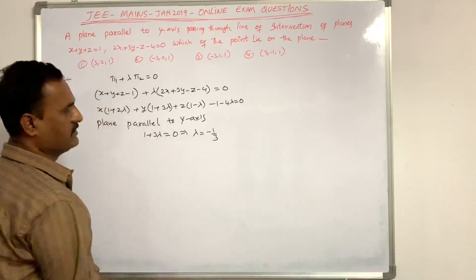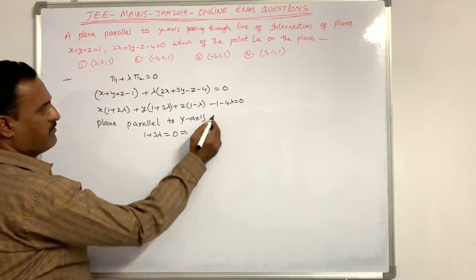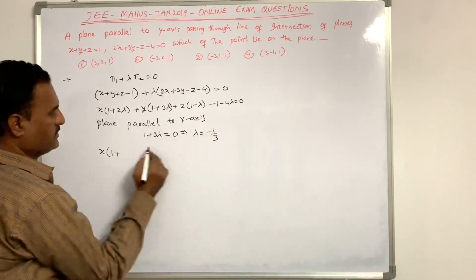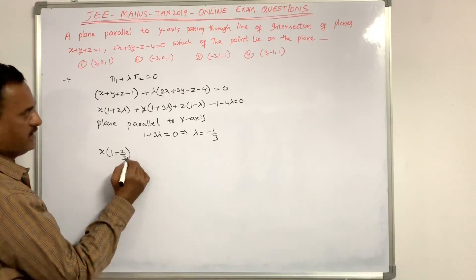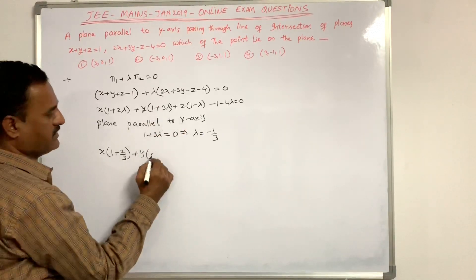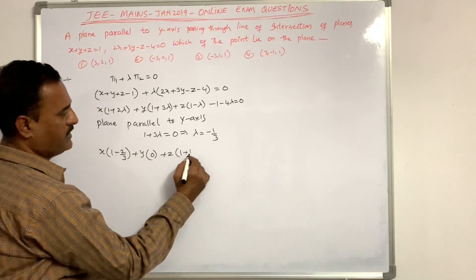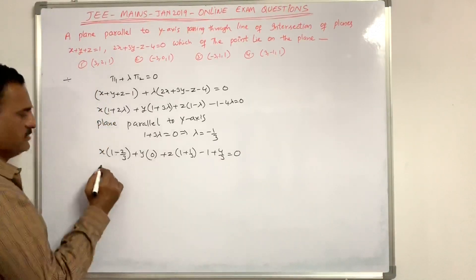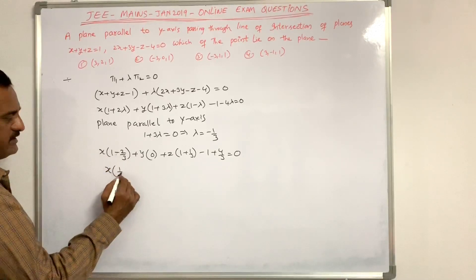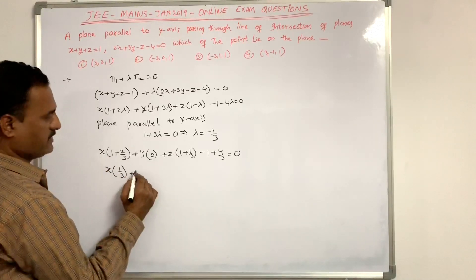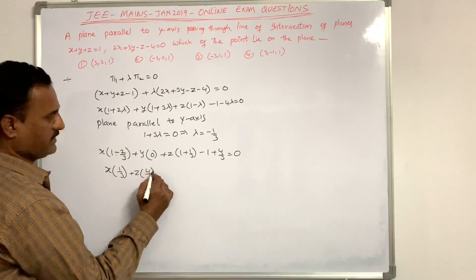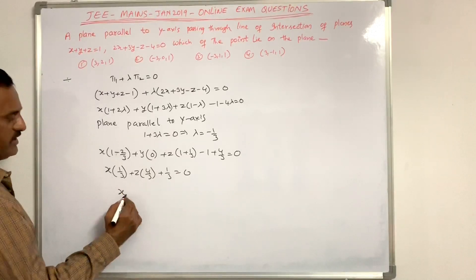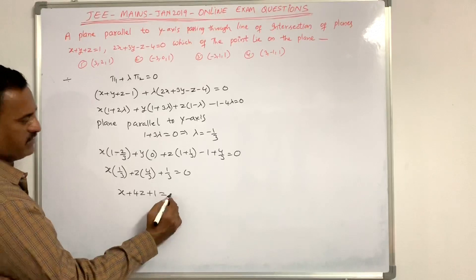That gives λ = -1/3. Substituting into the plane equation: x(1 + 2(-1/3)) + y(0) + z(1 + 1/3) - 1 - 4(-1/3) = 0. Taking LCM and simplifying gives x + 4z + 1 = 0.